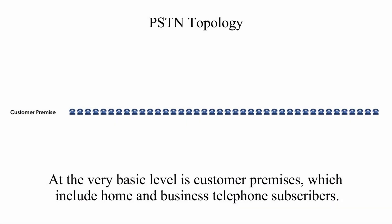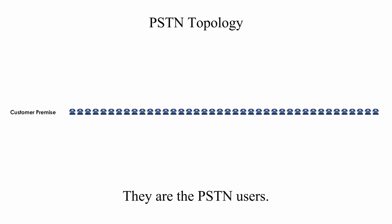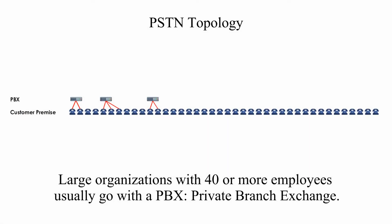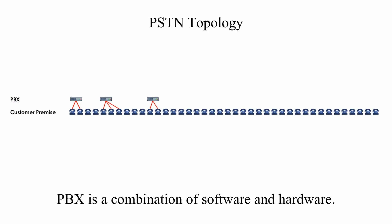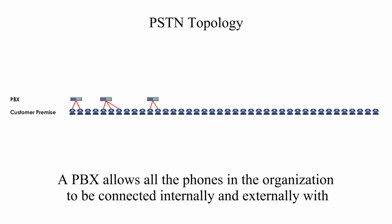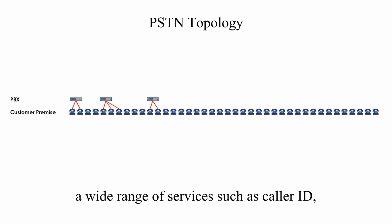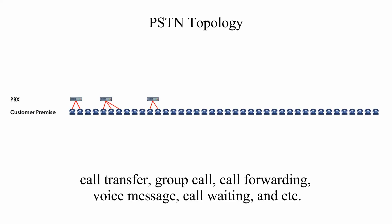At a very basic level is customer premises, which include home and business telephone subscribers — they are the PSTN users. Large organizations with 40 or more employees usually go with a PBX, Private Branch Exchange. PBX is a combination of software and hardware. A PBX allows all the phones in the organization to be connected internally and externally with a wide range of services such as caller ID, call transfer, group call, call forwarding, voice message, call waiting, etc.